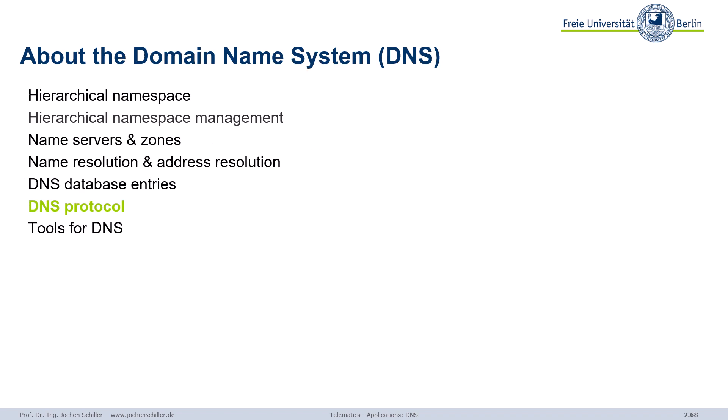We saw the tree structure — who's responsible for what. I gave you a first look into the DNS database, what the entries are. And now what is missing? We need a protocol that somehow exchanges this data.